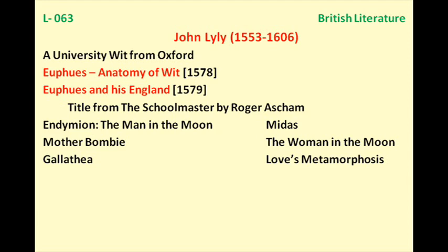Remember that he wrote only comedies and never wrote any tragedy. His famous works are Euphues: The Anatomy of Wit, published in 1578, and Euphues and His England, published in 1579 or 1580. The word 'euphues' is taken from the Greek language and its meaning is 'gracefully witty' — referring to someone who is capable of creating humor effectively.